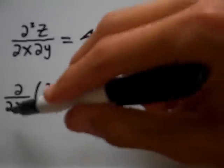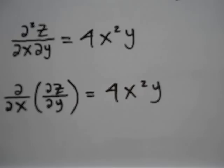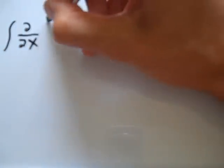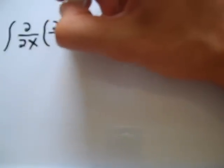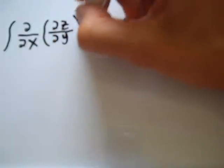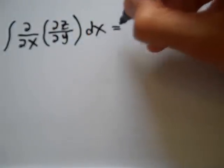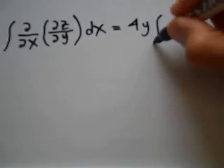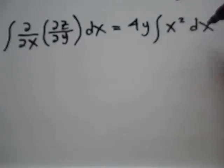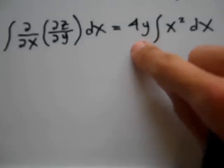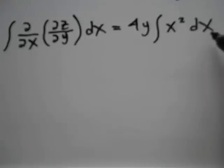Now I'm going to take this equation and integrate both sides of it with respect to x. Integrating both sides with respect to x, I have the integral of the partial derivative with respect to x of the partial derivative of z with respect to y, integrating with respect to x, is equal to 4y times the integral of x squared with respect to x. Notice that I pull the y out of the integration because I'm integrating with respect to x — therefore y is considered a constant.